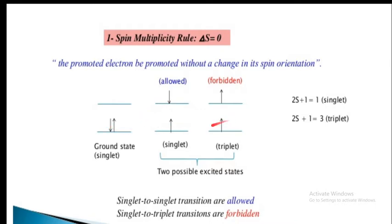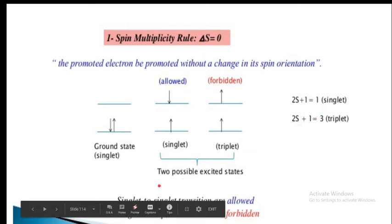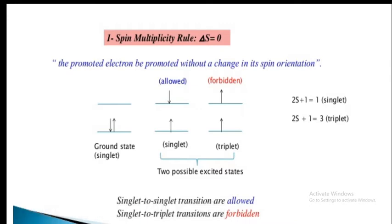In the singlet excited state, spin conservation is maintained. In the triplet state, there will be two unpaired electrons with the same spin, giving 2S plus 1 equal to 3. The selection rule states that singlet to singlet transitions are allowed, but singlet to triplet transitions are forbidden.